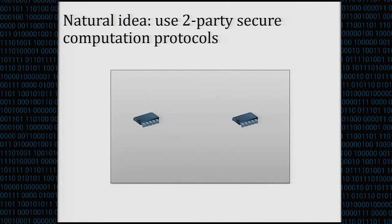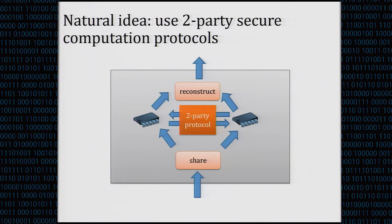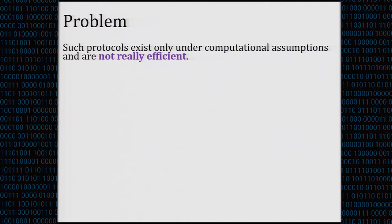The natural idea is to use two-party secure computation protocols — a standard technique from cryptography. This allows computing any function we want such that neither party learns the input. We share the input, exchange information via a two-party protocol, and at the end the output is reconstructed by the master circuit. The problem with this solution is that the two-party protocols we know are all based on computational assumptions and are not very efficient.